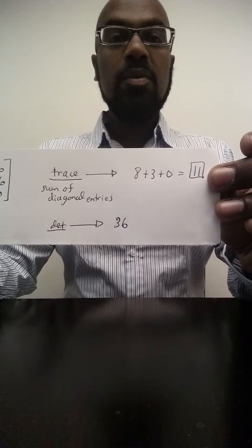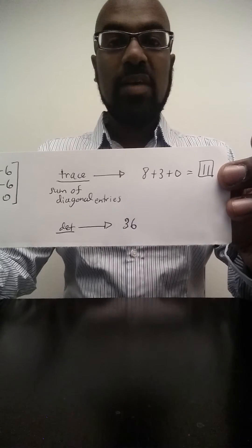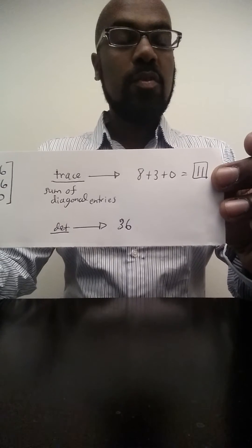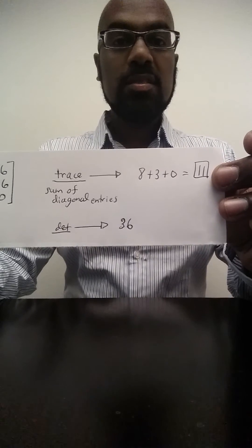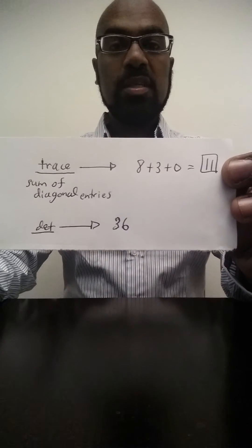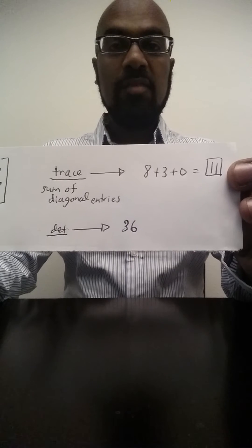So if we let lambda 1 and lambda 2 be the corresponding remaining eigenvalues, we know 3 is an eigenvalue. The sum of 3, lambda 1, and lambda 2 is going to be 11 because that's the trace. And the product of 3, lambda 1, and lambda 2 is going to be 36. So we can use those two equations to determine the remaining eigenvalues.